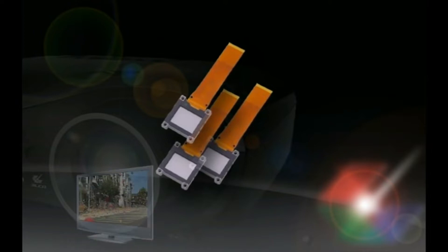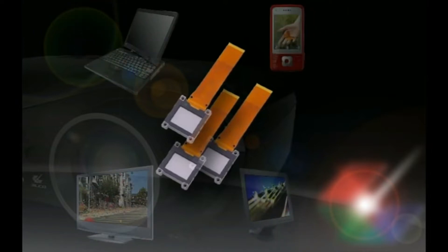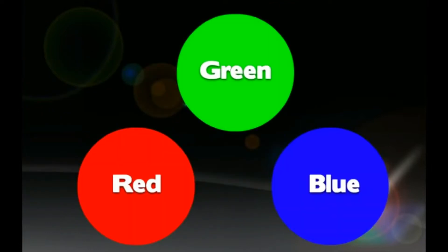Why are there three imaging chips? All colors in a projected image are made through combinations of the three primary colors of light: red, green, and blue.